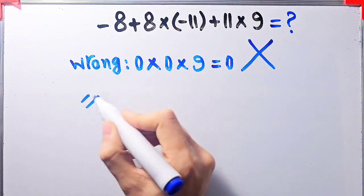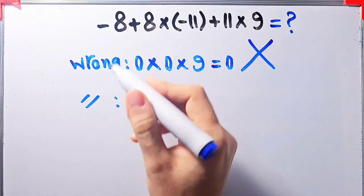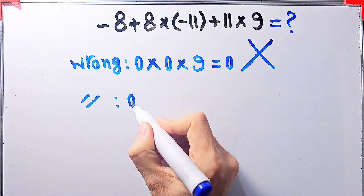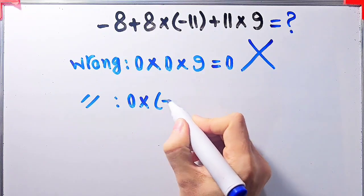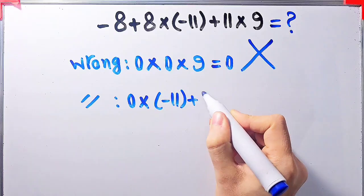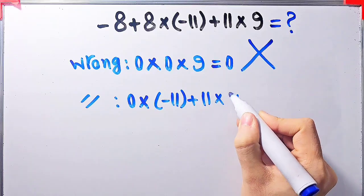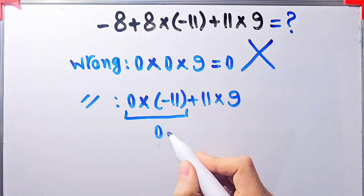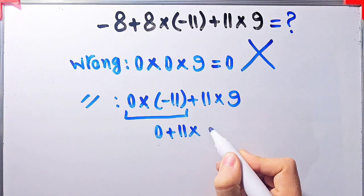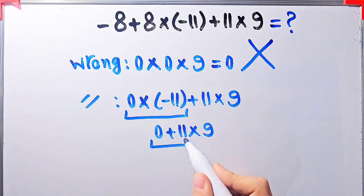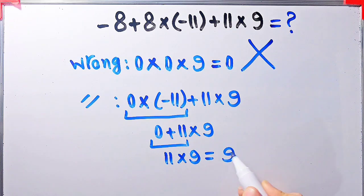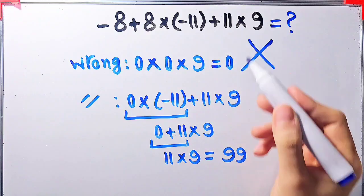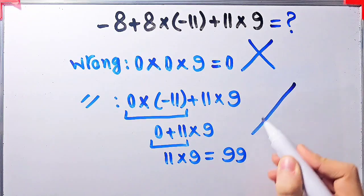Again, some people solve it like this: negative 8 plus 8 equals 0, then 0 times negative 11 equals 0, then 0 plus 11 equals 11, and 11 times 9 equals 99. They say the final answer equals 99, but this answer is definitely wrong.